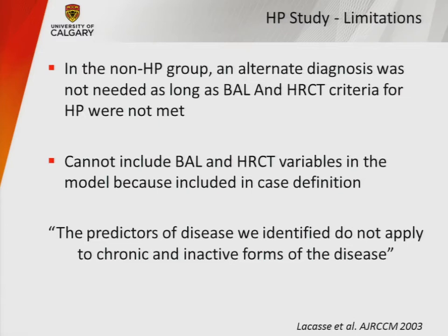Some limitations: in the non-HP study group, you didn't need a final alternative diagnosis as long as you lacked lymphocytosis and characteristic HRCT findings — so some could still have had chronic HP. Also, BAL and HRCT couldn't be included in the prediction model because they were used to define the diagnosis, creating a circular argument. The authors stated the predictors do not apply to chronic and inactive forms of disease but apply well to acute and subacute forms, particularly with an identified antigen.